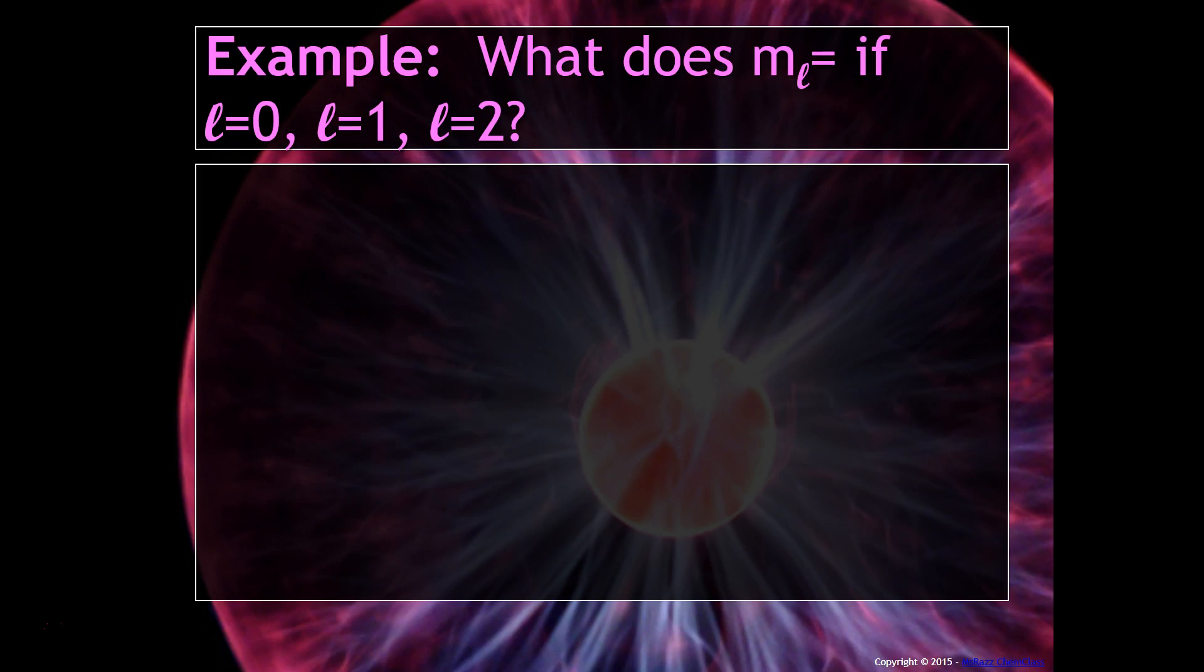So for example, what does M sub L equal if L equals 0, L equals 1, and L equals 2? So when L equals 0, that means we're talking about an S sublevel. So that means there's only one orientation in three-dimensional space, and that is 0.